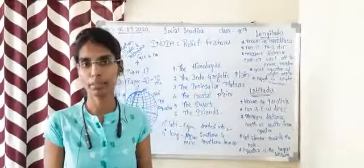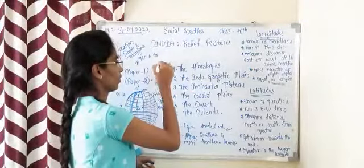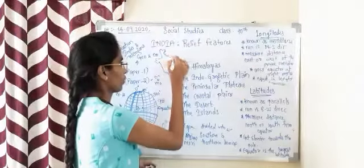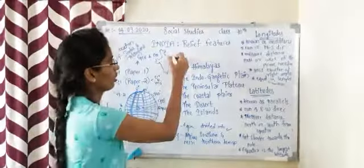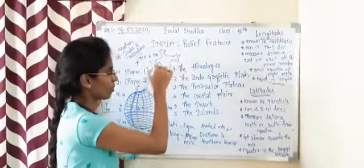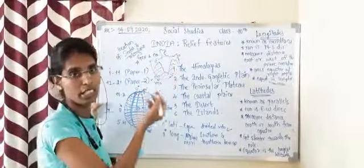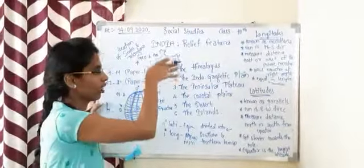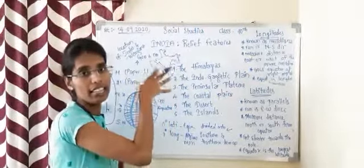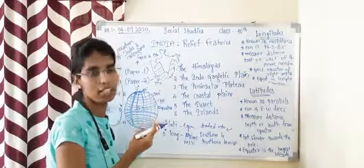What is the Peninsular Plateau? Looking at the map, the southern part of India is covered with water on three sides — we have the Bay of Bengal on the east side, the Arabian Sea on the west side, and the Indian Ocean on the south side. Any landmass which is covered by water on three of its sides is called a Peninsular Plateau.